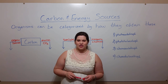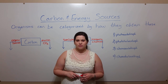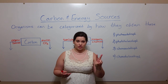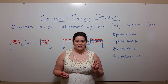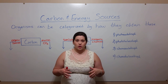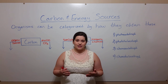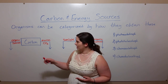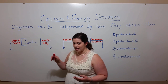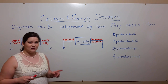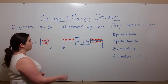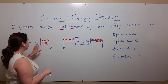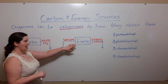Hi everyone and welcome to Biology Professor. Today we're going to be discussing the different ways in which organisms obtain two essential things: carbon and energy. We know that life is carbon-based and life needs energy in order to grow and develop, and so that's why the sources of carbon and energy are great ways to categorize organisms.